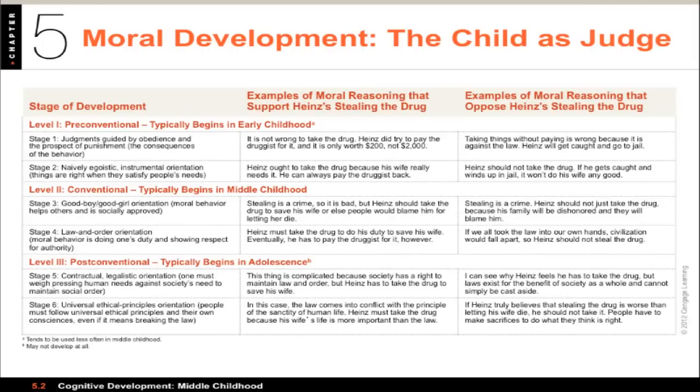At the conventional level, right and wrong are judged by conformity to conventional standards — family, religious, or social. According to stage three, called the good boy/good girl orientation, behavior is good if it meets the needs and expectations of others, and that can shift from situation to situation. For example, Heinz should take the drug or people would blame him for letting his wife die, or Heinz should not steal the drug because that would dishonor his family. In both situations, blame is the central concern.